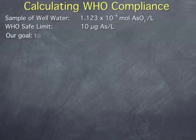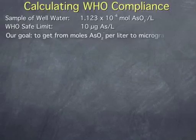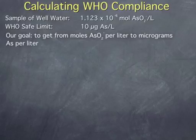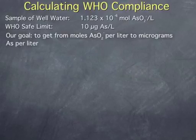Our goal is to get from moles of arsenite per liter to micrograms of arsenic atom per liter, so that we can compare it to the threshold set by the World Health Organization. To do this, we will need to use a number of different stoichiometric conversions or stoichiometric tools. Don't worry if you don't remember how to use all of these tools, since the next few sections of the course provide a review of these concepts.